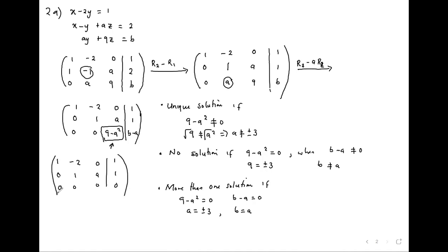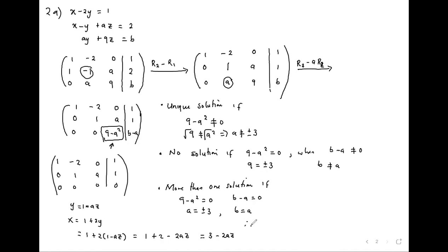With two equations and three unknowns: y equals 1 minus A times z, meaning y depends on z. Then x will be 1 plus 2y, substituting: x equals 1 plus 2 times (1 minus Az), which is 1 plus 2 minus 2Az, which is 3 minus 2Az. So x is 3 minus 2Az, y is 1 minus Az — any value of z gives you different values, so you get more than one solution.